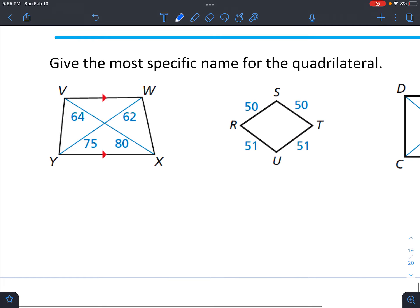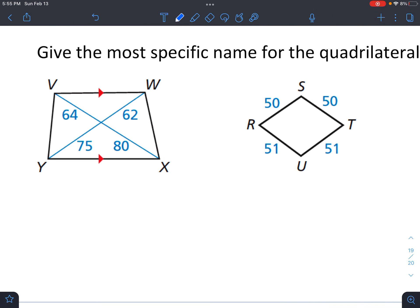So we're going to talk about the most specific name for each of these quadrilaterals. Let's see. So it looks like we've got parallel sides. And let's just check and see if these are equal. So 64 plus 80, does that equal 75 plus 62? I don't think it does. Nope, it does not. So it's just a regular trapezoid, not isosceles.